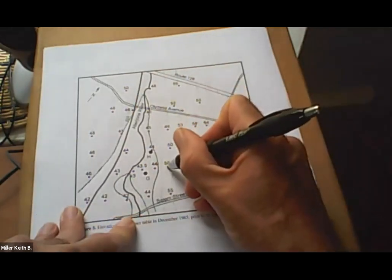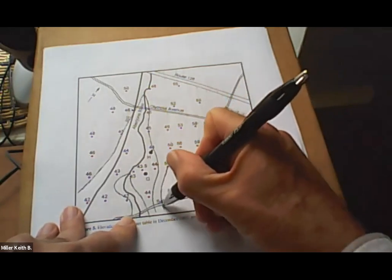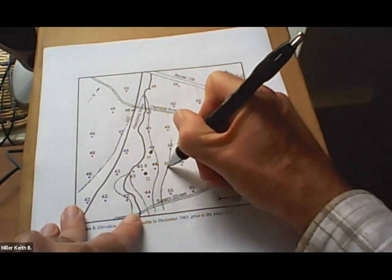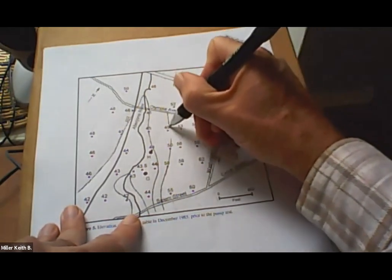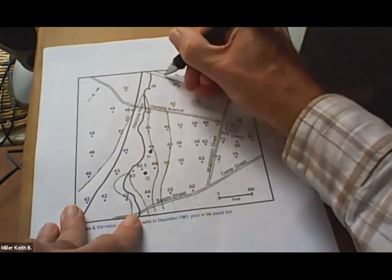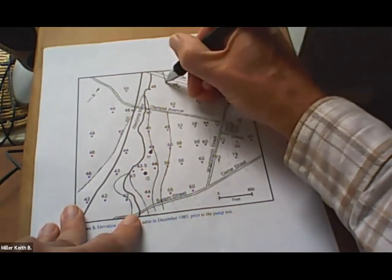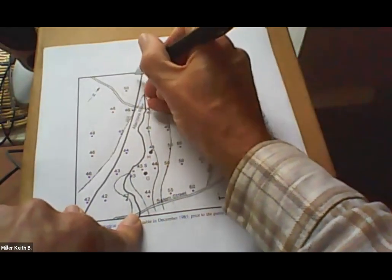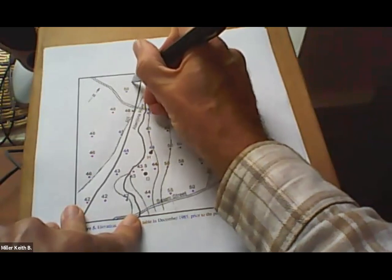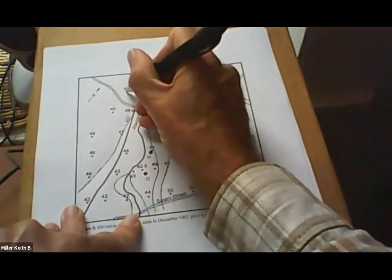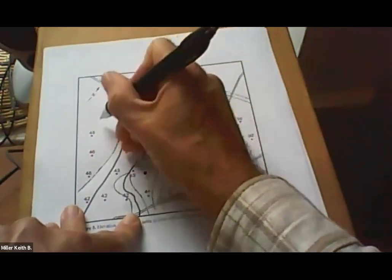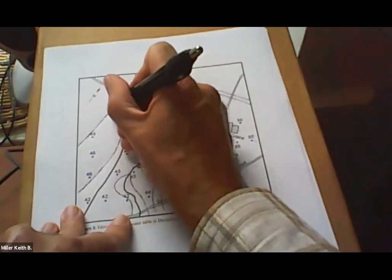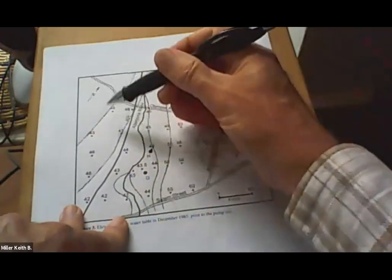So now we have 50. So here's another 50. And up here, there's 50 to the outside of these two 48. So that's about all we can do on this side of the map.